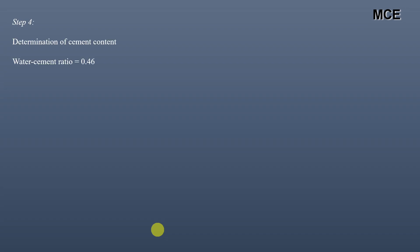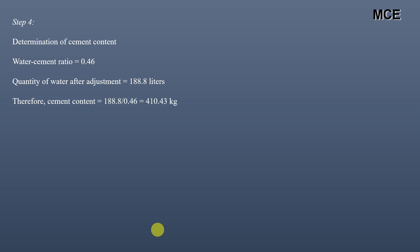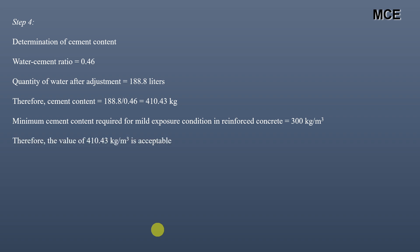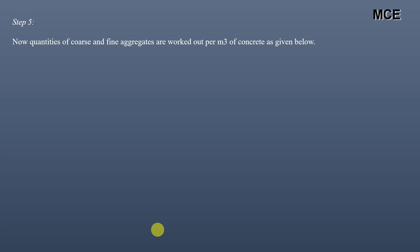Cement content is determined from the water-cement ratio: cement = 188.8 / 0.46 = 410.43 kg/m³. The IS code minimum cement content for moderate exposure is 300 kg/m³, so our value of 410.43 kg/m³ is acceptable.